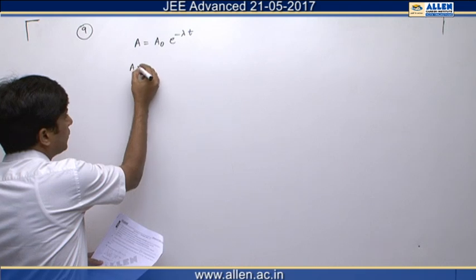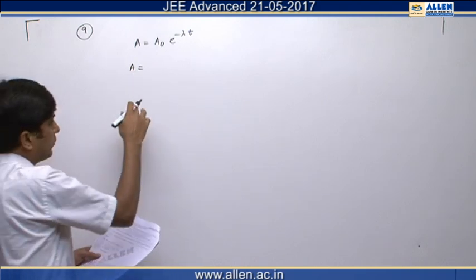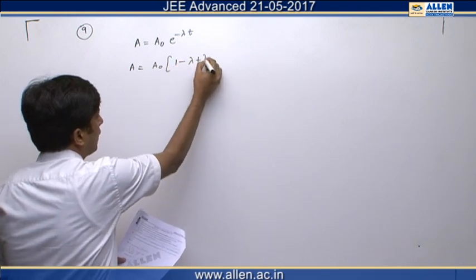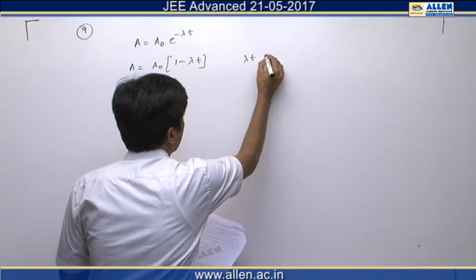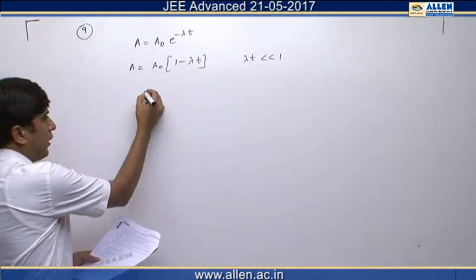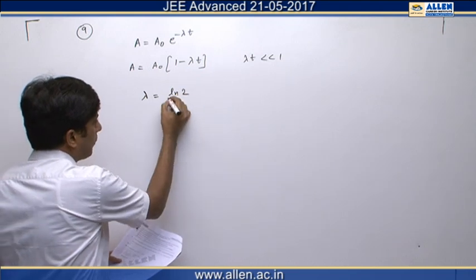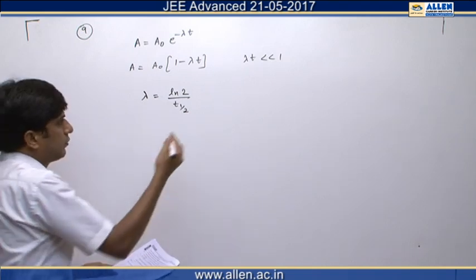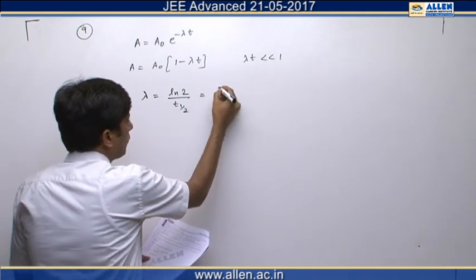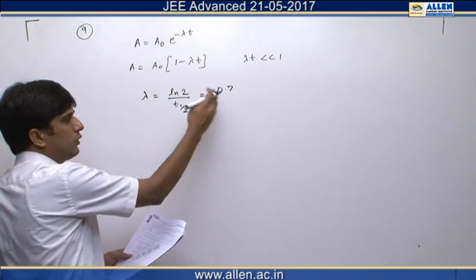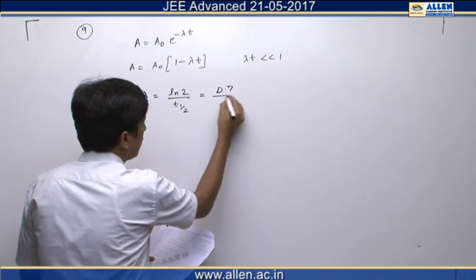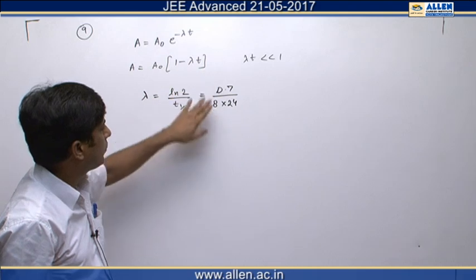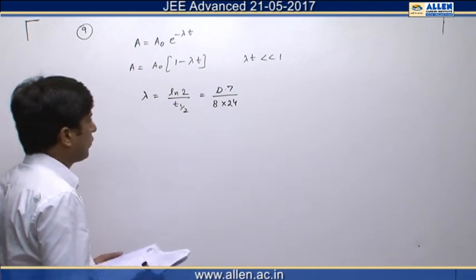We use the approximation given in the question: the expression can be written as 1 minus lambda t, because lambda t is very small compared to 1. The value of lambda is ln 2 divided by t-half, and t-half is 8 days. So lambda equals 0.7 divided by 8 into 24, giving units of per hour.